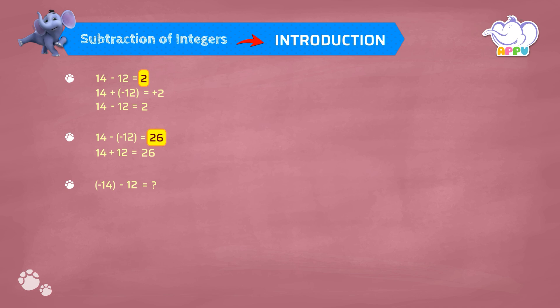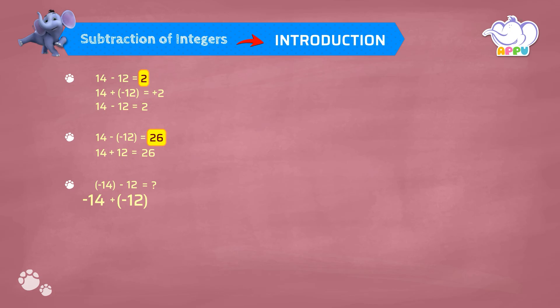The rule of subtracting integers is that we change it into an addition problem, because addition is easier. We can rewrite this as minus 14 plus the opposite sign of positive 12, which will be minus 12. Let's solve this using the procedure of adding integers. Here 14 and 12 are both negative integers. Since both numbers have the same signs, we add both numbers and place the sign, which is minus. We add 14 plus 12 which is 26, and since both are negative integers, the answer is minus 26.